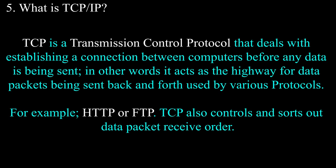Question number five: what is TCP over IP? TCP is a Transmission Control Protocol that deals with establishing a connection between computers before any data is being sent. It acts as a highway for data packets being sent back and forth, used by various protocols, for example HTTP or FTP. TCP also controls and sorts out data packet receive order.